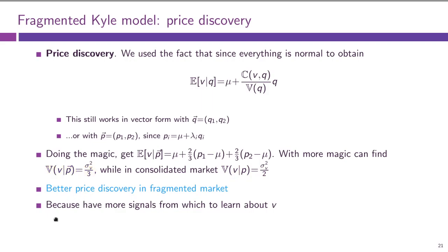The idea is that we have more signals from which to learn about V — a more statistical reasoning. We have two perfect signals of V, the trade sizes X_i, plus two different error terms U1 and U2. The fact that we have two different error terms allows us to extract the signal more precisely. The very basic statistical reasoning: the larger your sample size, the better your inference.